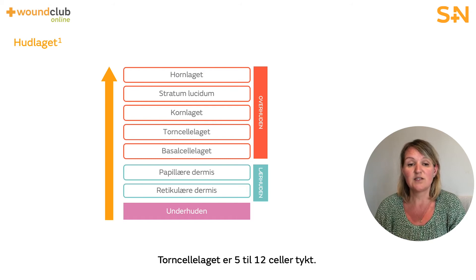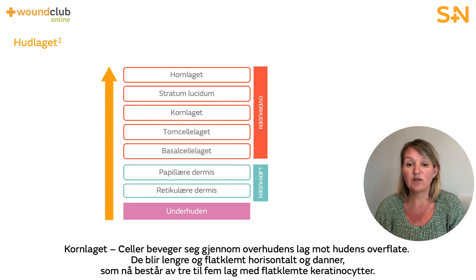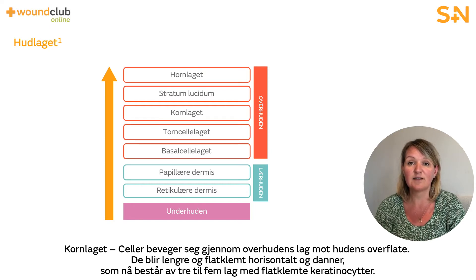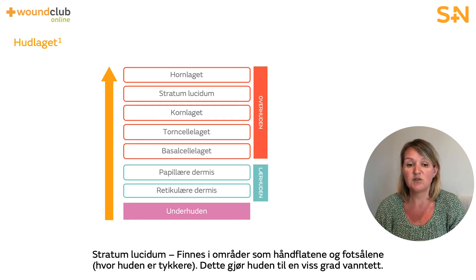The stratum spinosum is five to twelve cells thick. Cells travel through the epidermal layers towards the surface of the skin, becoming longer and flattening horizontally to form the stratum granulosum, which is composed of three to five layers of flattened keratinocytes. The stratum lucidum is a layer found in areas such as the palms of the hands and soles of the feet, and provides some degree of waterproofing to the skin.